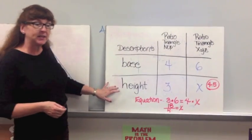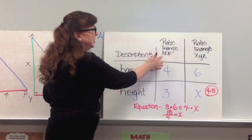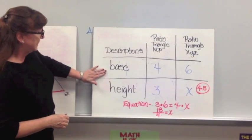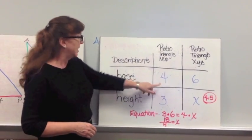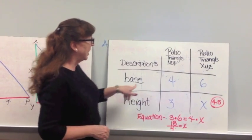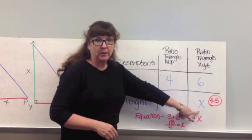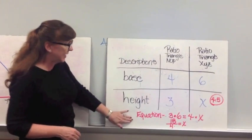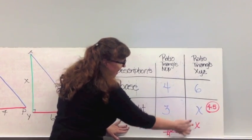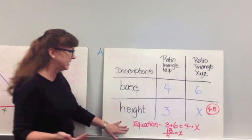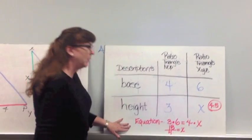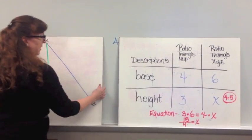Using the tic-tac-toe method, we've got base and height as descriptions. The ratio of triangle NOP to triangle XYZ: base and height. The base of the first triangle was 4, the height was 3, and for the other triangle the base is 6, and the height is what we're trying to find. Using cross multiplication: 3 times 6 equals 18, and that equals 4 times X. So we isolate the variable — 18 divided by 4 equals X.